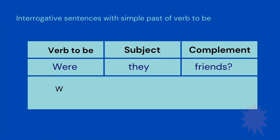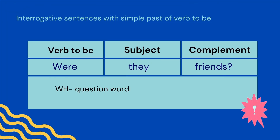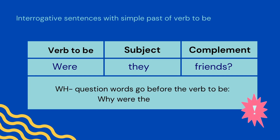To create interrogative sentences with the simple past of the verb to be, we will follow this structure: verb to be plus subject plus complement. For example, were they friends? Keep in mind that WH question words go before the verb to be. For example, why were they friends?